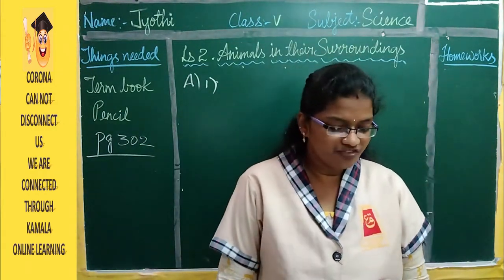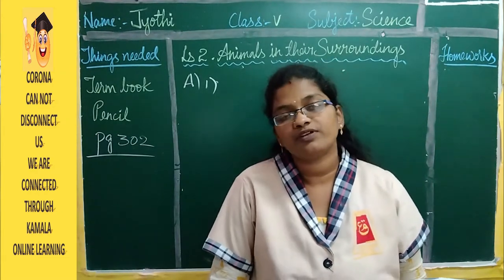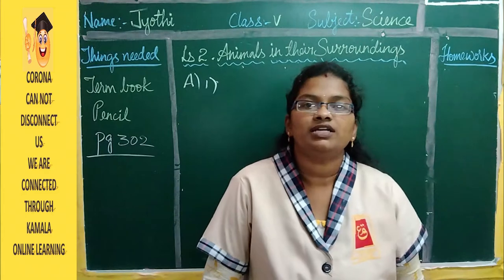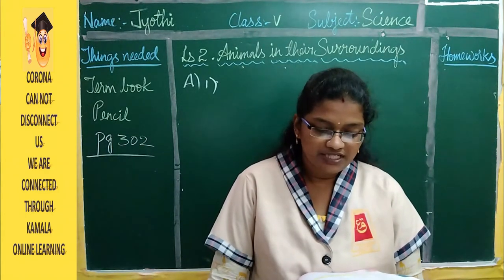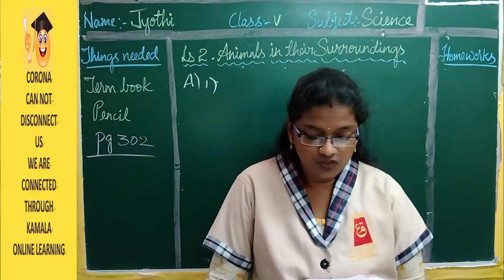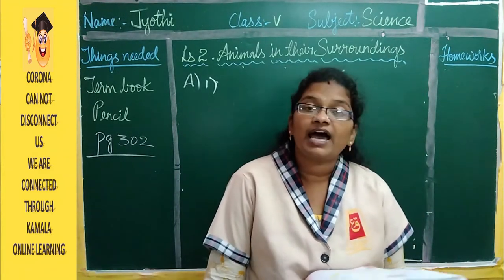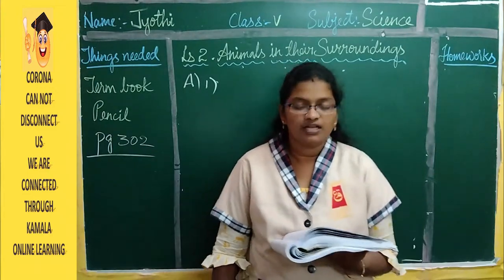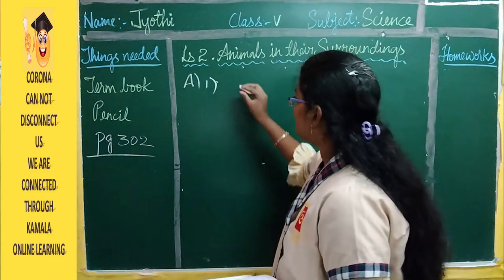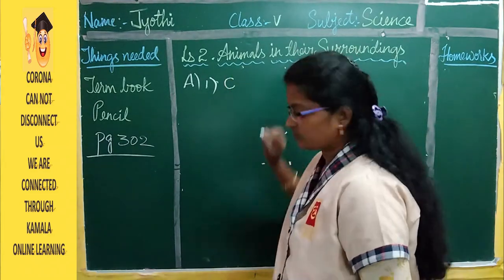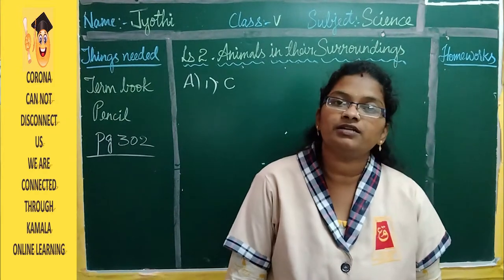Question: A frog is an amphibian because it can live — only in water, only on land, on land and in water, or none of these. The correct answer is option C: it can live on land as well as in water.